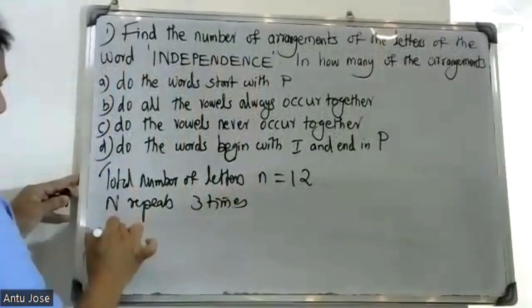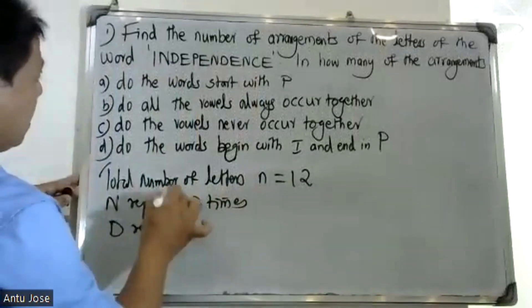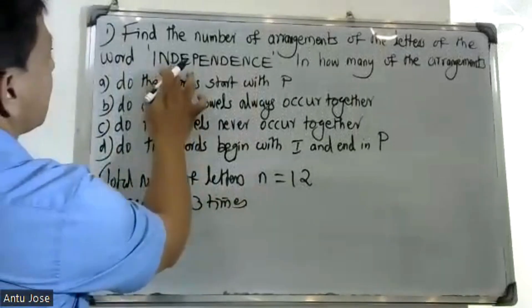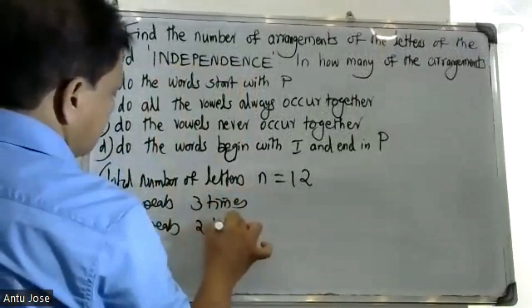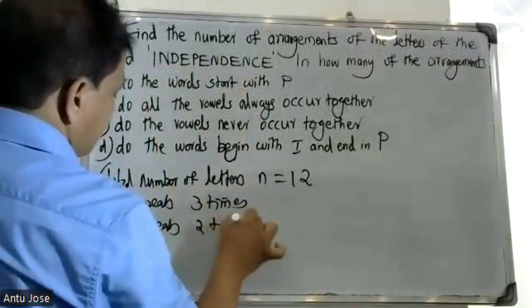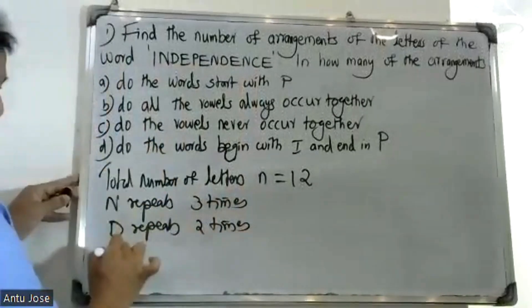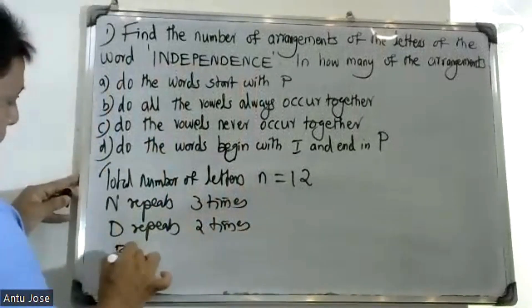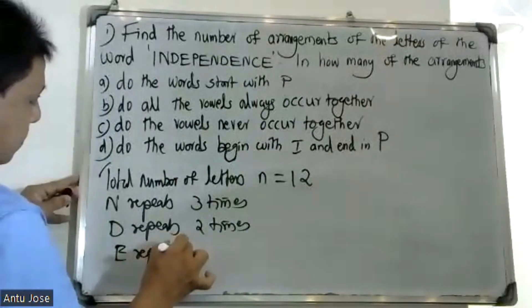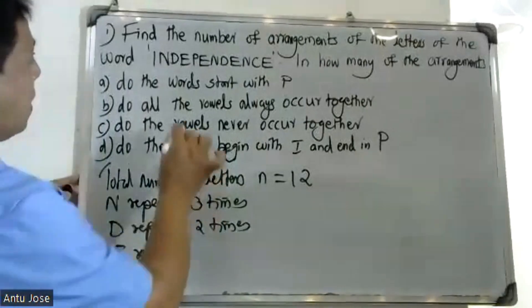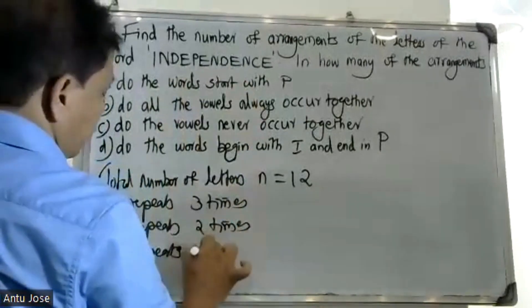D repeats. Counting D: 1, 2, 3, 4, 5, 6, 7, 8, 9, 10 — D repeats 2 times. E repeats 4 times.